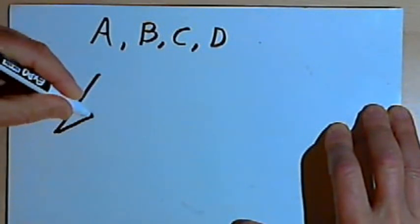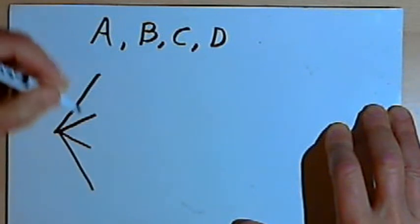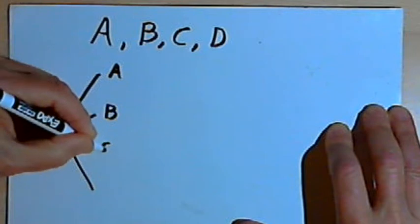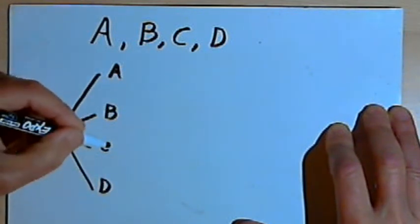I can figure this out with a tree diagram. So I'll start a tree diagram with four branches, one for each of the four letters that I could take for the first letter in my arrangement: A, B, C, and D.